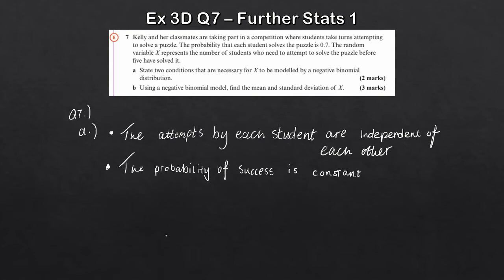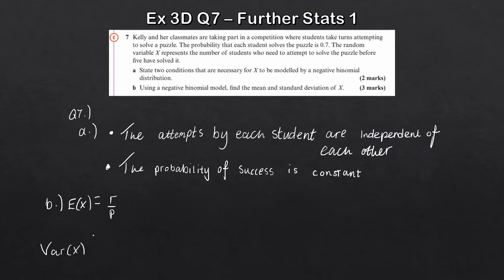For part B, we work out the mean and standard deviation of X. Using the same formulas: E(X) = r over p, and Var(X) = r(1−p) over p². Note we need the standard deviation, so we'll square root the variance at the end. Let's write down the distribution: X ~ NB(5, 0.7).